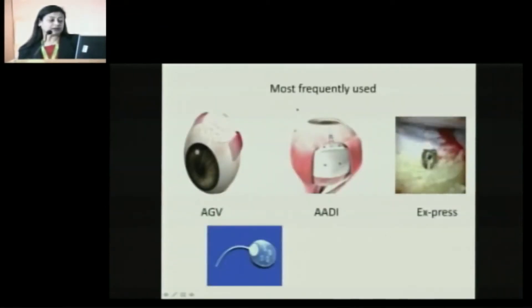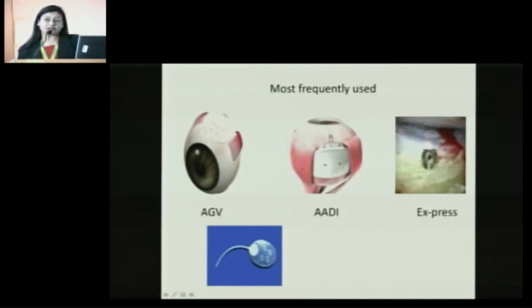Currently, the most frequently used are the AGVs. We have the Indian version, that is the Keki Mehta valve. We have the ADI, that is the Oralab aqueous drainage implant, which is a modified Indian version of the Baerveldt. And we have the Express.